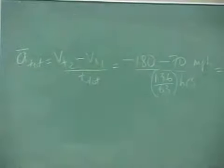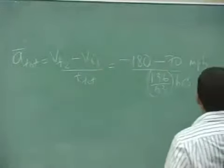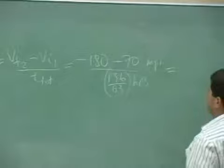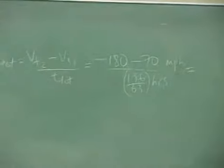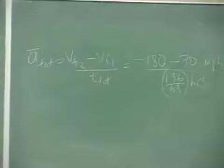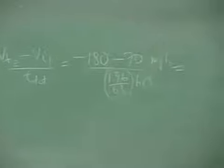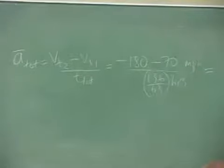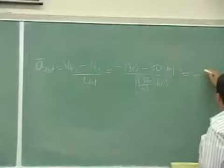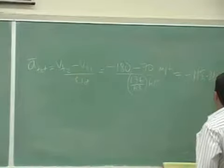Okay, calculate that. Give me the answer in two decimal digits. Okay, it's negative, right? Negative miles per hour squared.